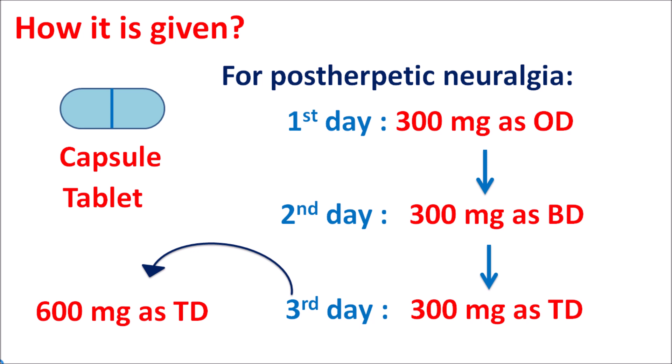In summary, gabapentin is a GABA analog — structurally related to GABA but not acting on GABA receptors. It acts on the alpha-2-delta-1 site on voltage-gated calcium channels, reducing neurotransmitter release from presynaptic neurons. Drowsiness, somnolence, dizziness, and fainting are important precautions. The drug can produce hypersensitivity reactions and multi-organ hypersensitivity. It is used in the treatment of partial epilepsy, neuropathic pain, and post-herpetic neuralgia.